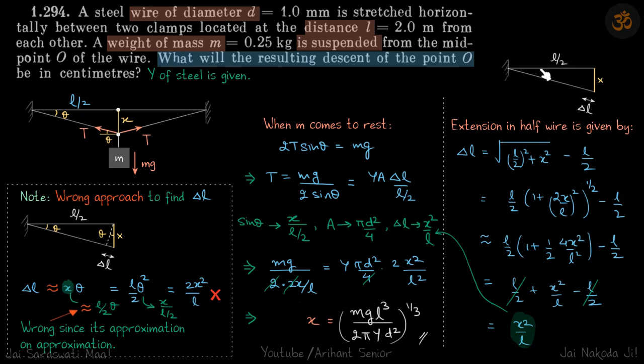Let's do it by a brute method. Initially it was L by 2 and it has descended by X. The change in length is delta L, given by root of L by 2 square plus X square minus L by 2. Because X is small, we'll take the binomial approximation. Eventually it will come to be X square by L. So that is delta L.